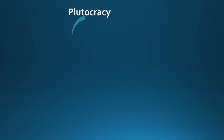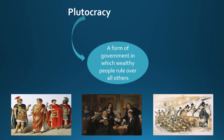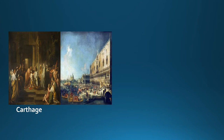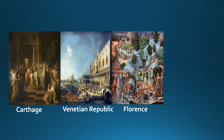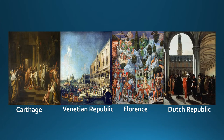A plutocracy is a form of government in which wealthy people rule over all others; only those with significant wealth can have much influence in the political process. Examples include ancient Carthage, where wealthy merchants dominated the political landscape and even the city's kings often paid for their office; the Venetian Republic, where wealthy merchants dominated the government; and Florence and the Dutch Republic during the early modern period, where wealthy families also dominated the government.